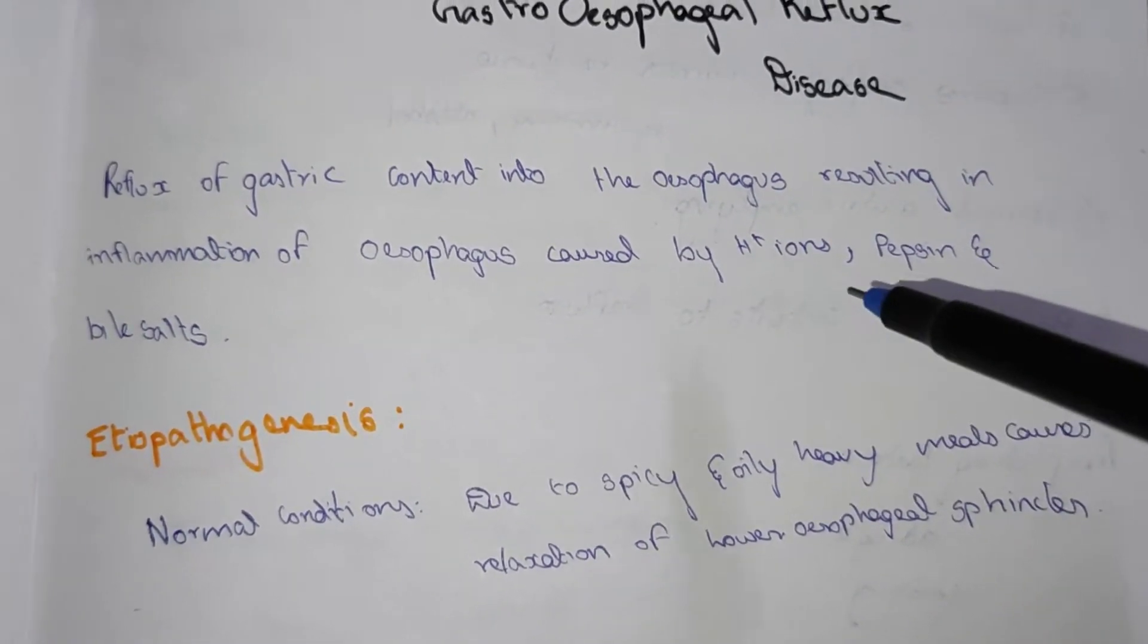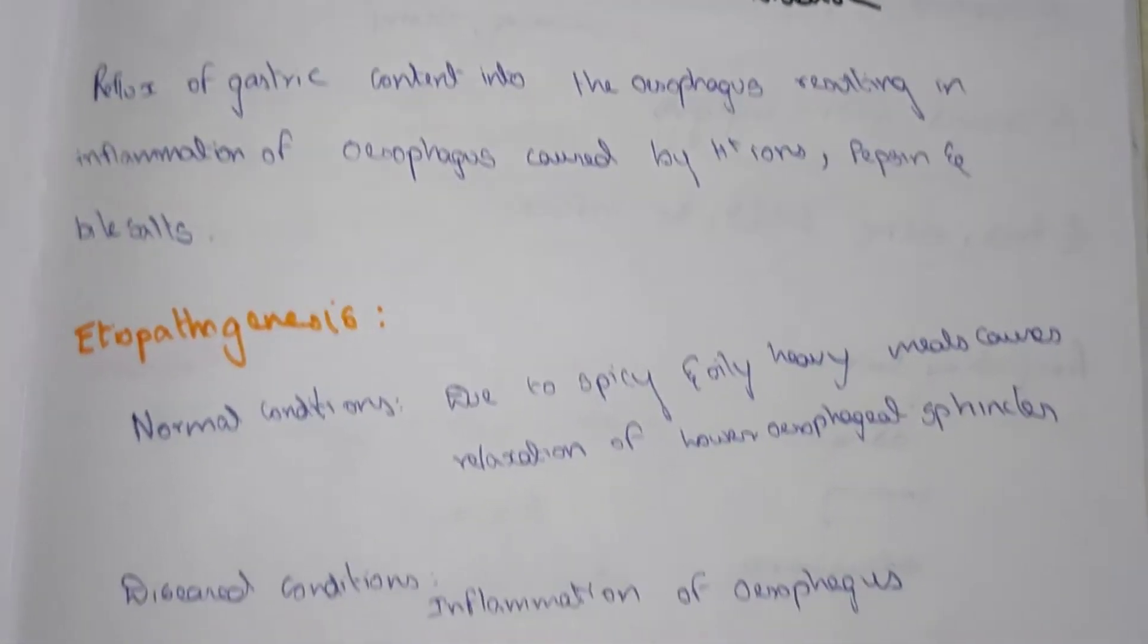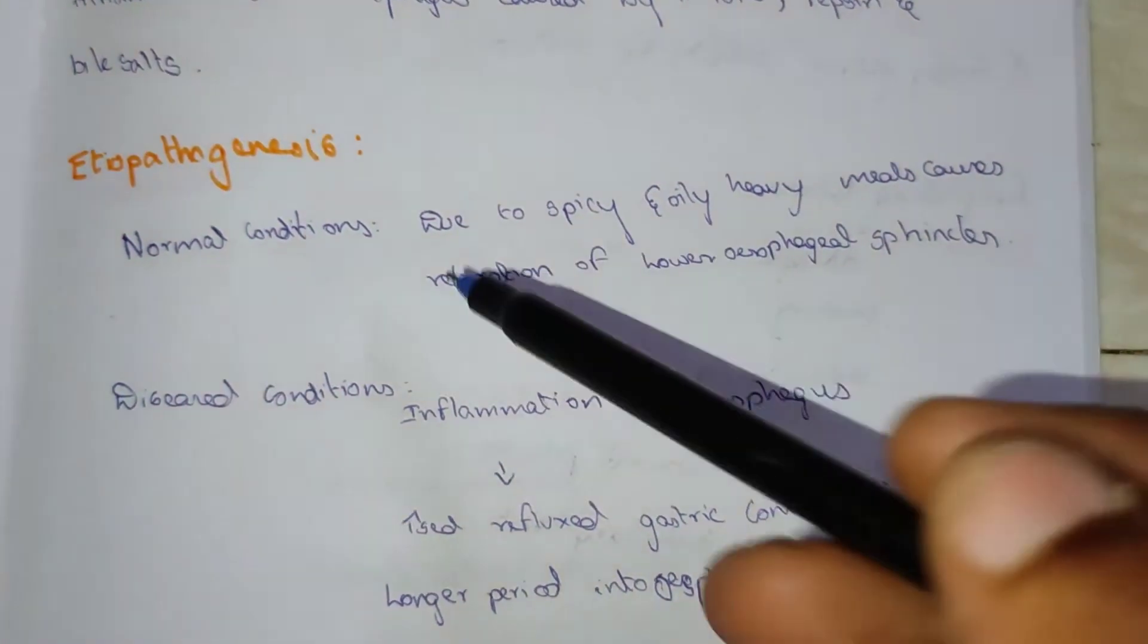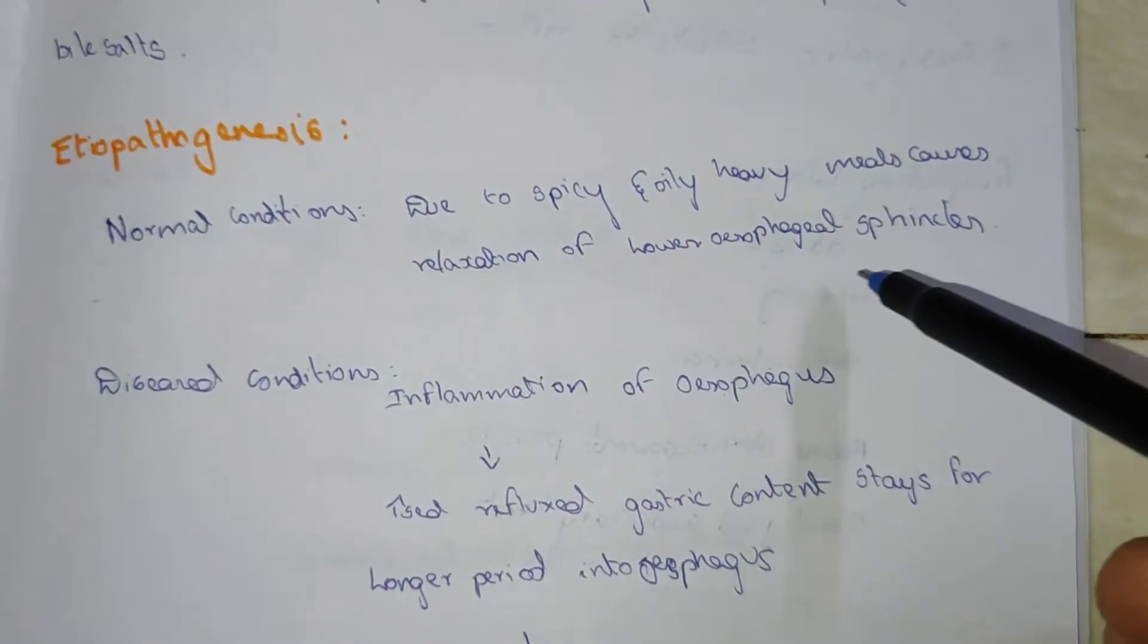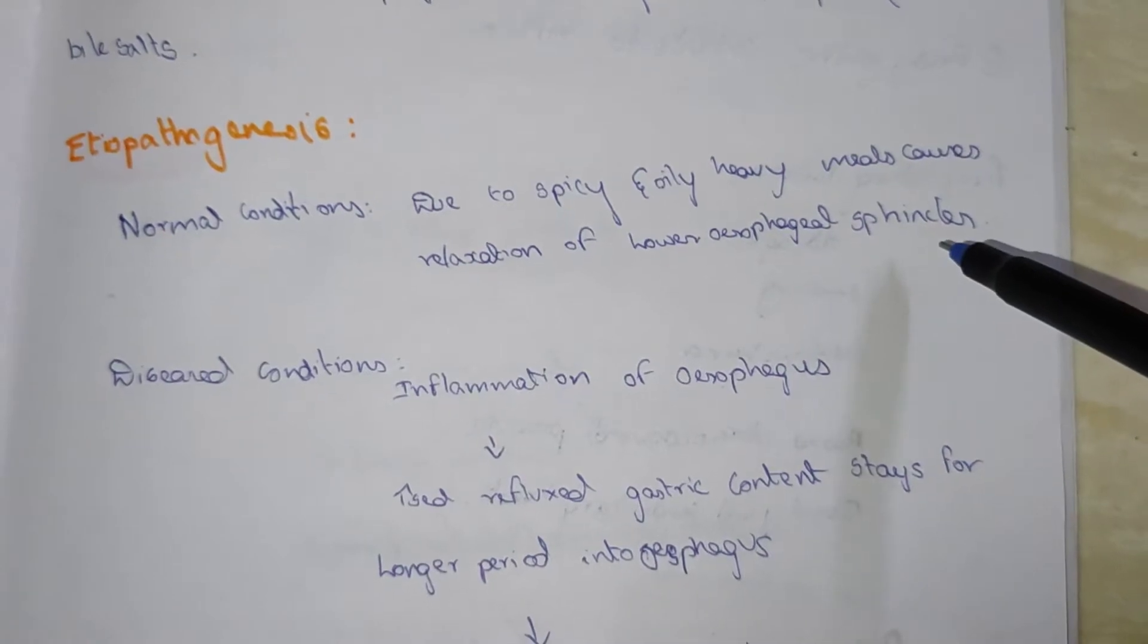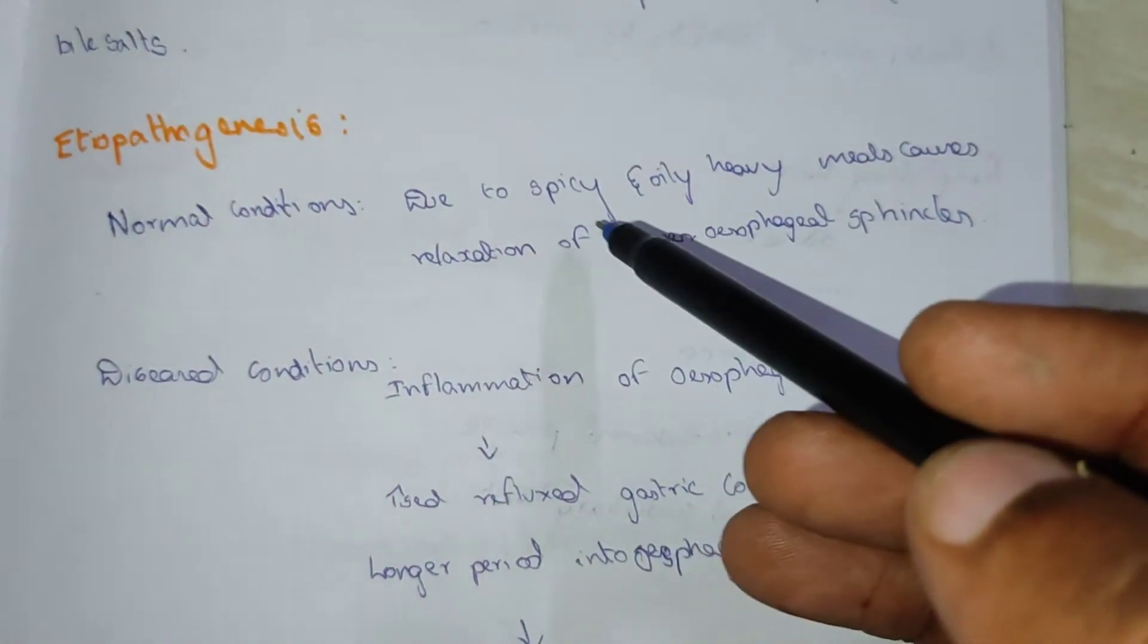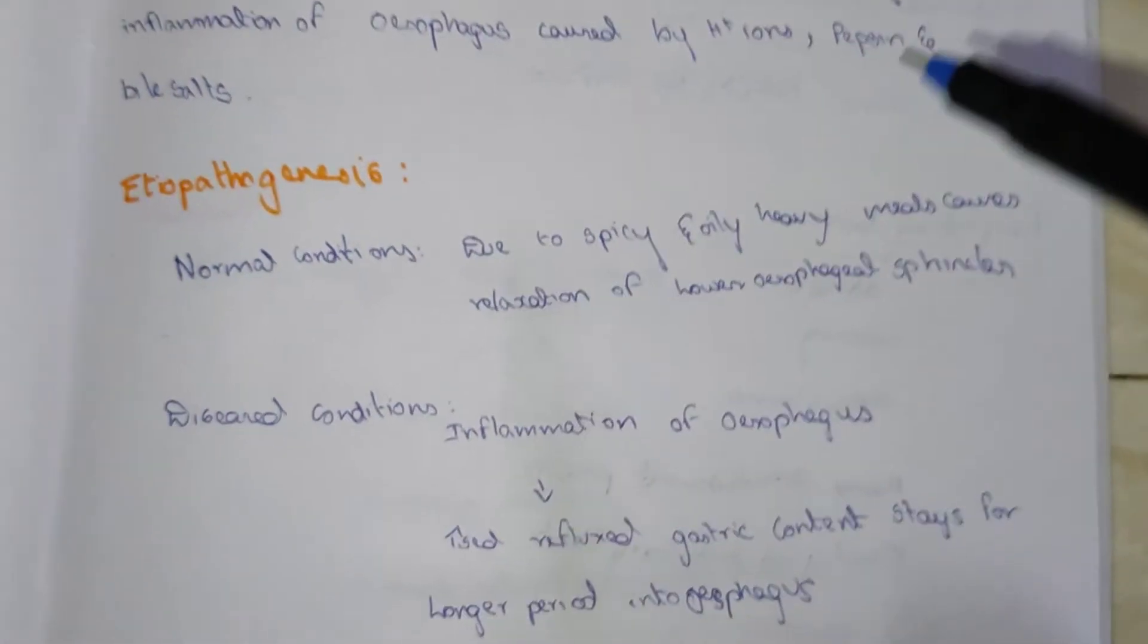It is caused by H+ ion, pepsin, and bile salts. Now we will see the etiopathogenesis. In normal condition, due to spicy and oily heavy meals, causes relaxation of lower esophageal sphincter. So that due to spicy and oily heavy meals, it may lead to gastroesophageal reflux disease.